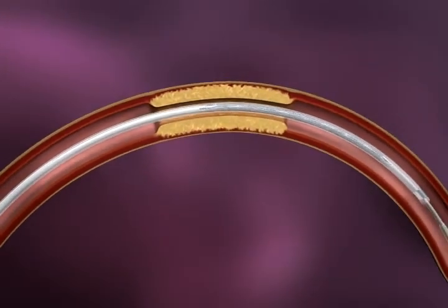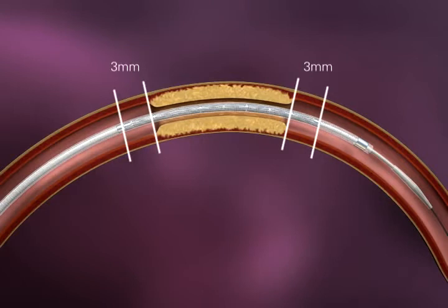Slightly withdraw the delivery system until the stent is directly aligned with the lesion. The stent should extend approximately 3 mm over each side of the lesion. The stent is now ready to deploy.